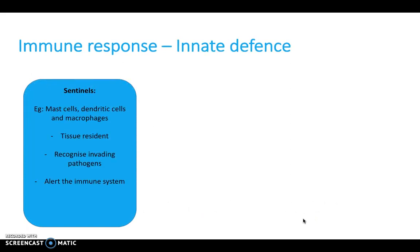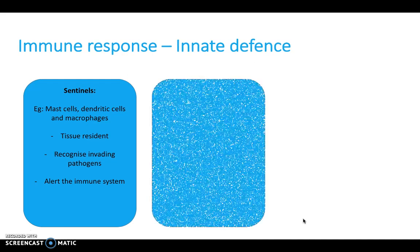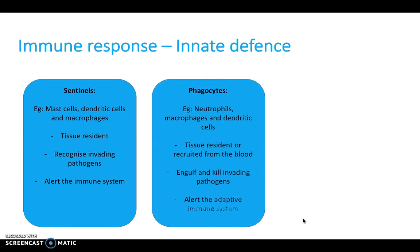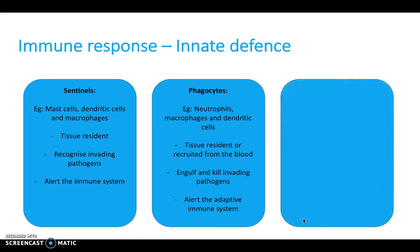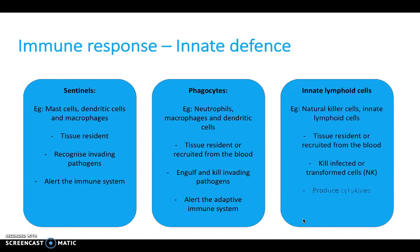We have sentinel cells — our soldiers — which are resident in the tissues. They recognize invading pathogens and alert the immune system. These include mast cells, dendritic cells, and macrophages. We also have phagocytes — our killers — such as neutrophils, macrophages, and dendritic cells. These are resident in the tissue or sometimes recruited from the blood, and they engulf and kill invading pathogens, alerting the adaptive immune response if they can't cope alone.